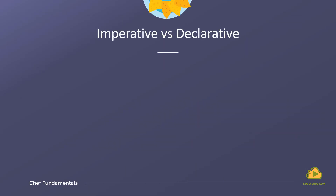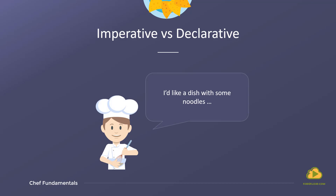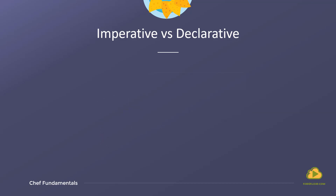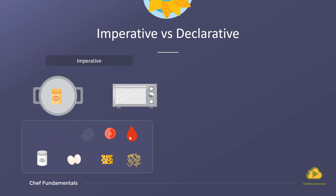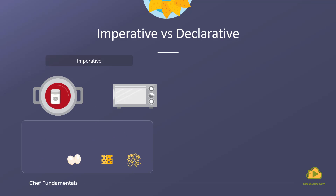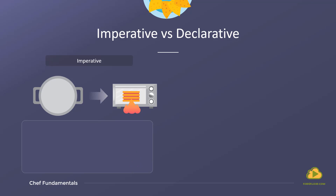What we just saw are examples of two types of patterns of programming — imperative and declarative. Let us understand this using a simple analogy. Imagine going into a restaurant and having to say: can I get a dish with some noodles, then stir some tomatoes, tomato paste, water, sugar, salt, and pepper, then mix some egg and cheese into it, and then bake it in an oven at 375 degrees for 25 minutes. That's kind of the imperative way of ordering a dish.